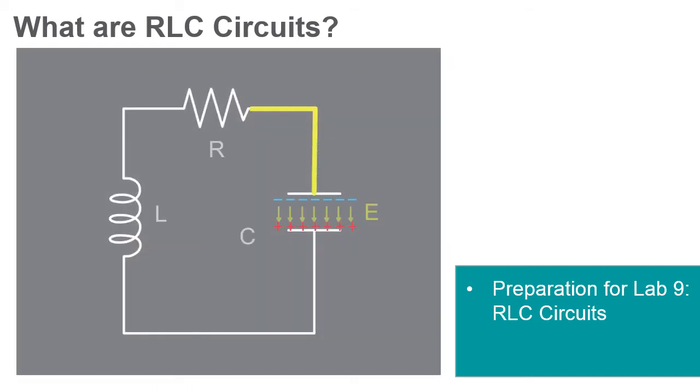An RLC circuit is also known as a resonant circuit, tuned circuit, or LCR circuit. It is an electrical circuit consisting of a resistor R, an inductor L, and a capacitor C, connected in series or in parallel.